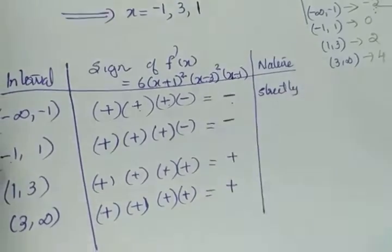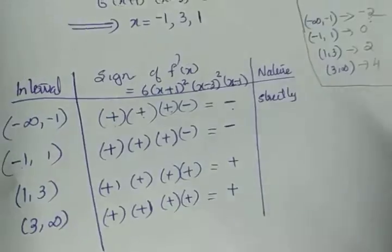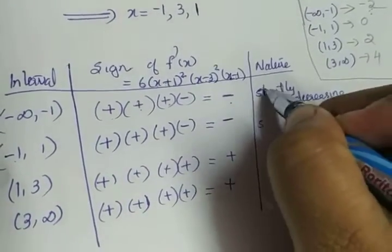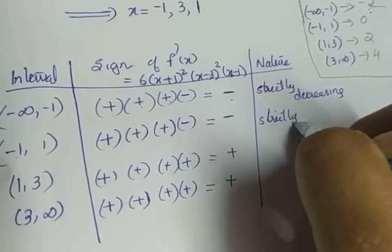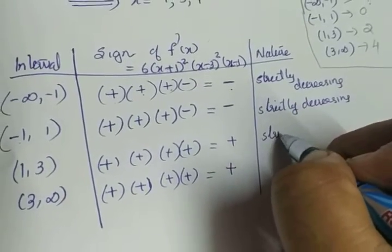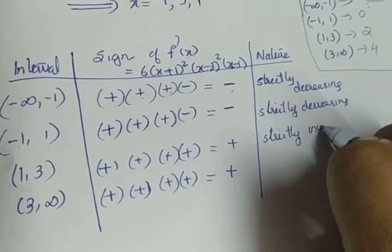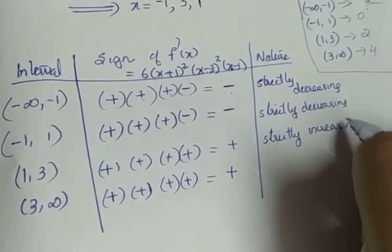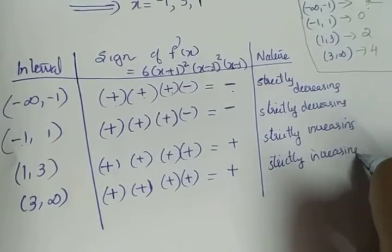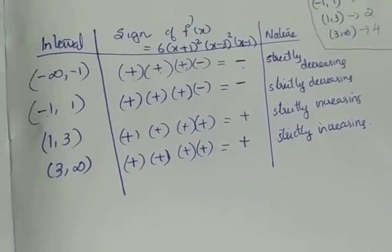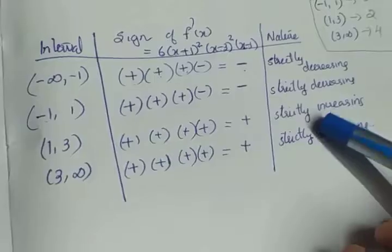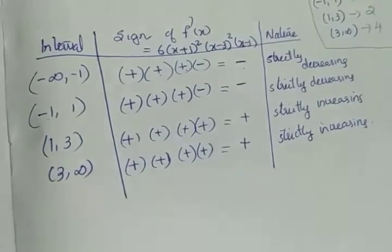Since f'(x) is negative in (-∞,-1) and (-1,1), the function is strictly decreasing on those intervals. Since f'(x) is positive in (1,3) and (3,∞), the function is strictly increasing there. Therefore f(x) is decreasing on (-∞,-1) ∪ (-1,1) and strictly increasing on (1,3) ∪ (3,∞).